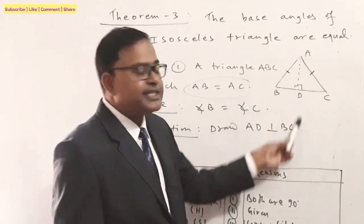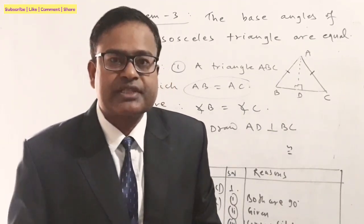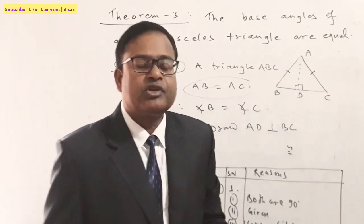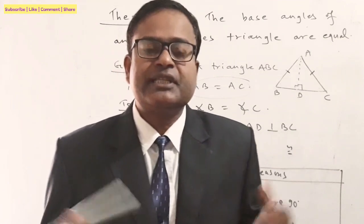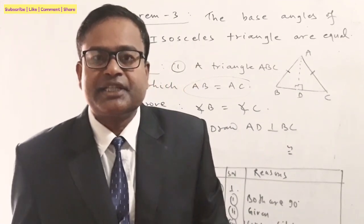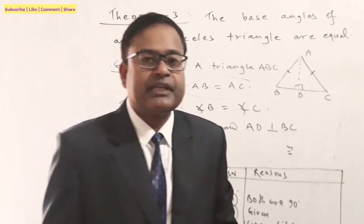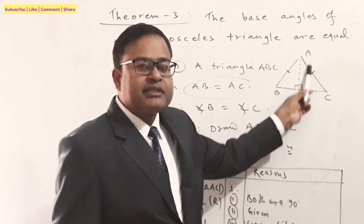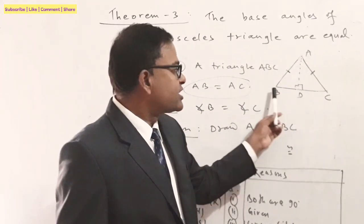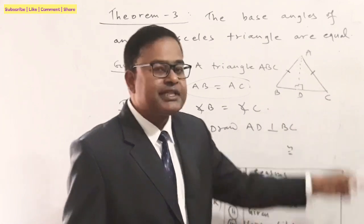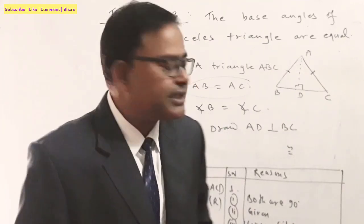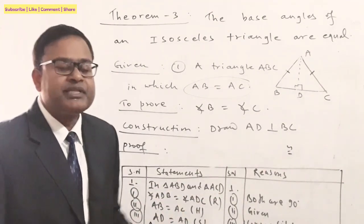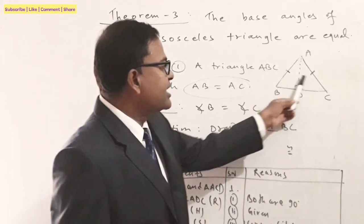In order to prove this theorem, we take a construction: we draw AD perpendicular to BC. Perpendicular means the line which makes a 90-degree angle with another line. So we draw AD such that AD makes 90 degrees with side BC.